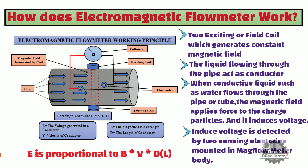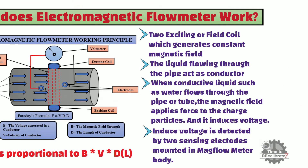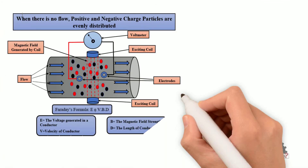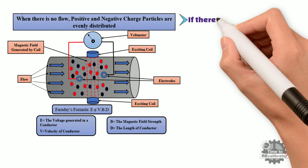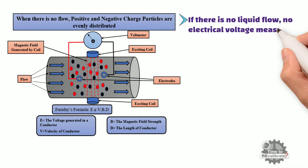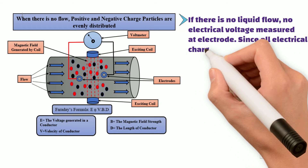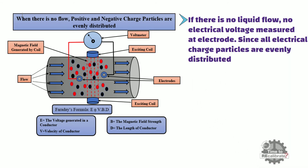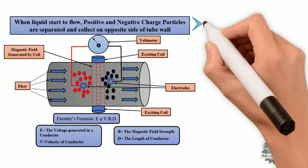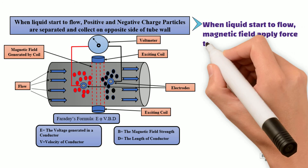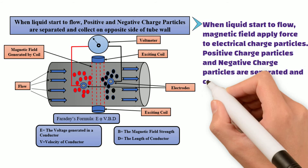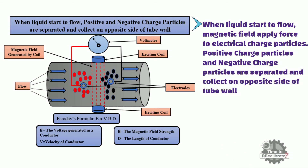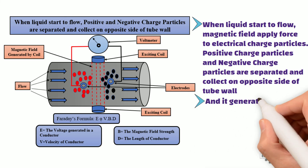In this equation, B is the magnetic field strength, V is the velocity of the conductor, and D is the length of the conductor. As you can see from the picture, if there is no liquid flow, no electrical voltage is measured at the electrodes, since all electrical charge particles are evenly distributed. When liquid starts to flow, the magnetic field applies force to the electrical charge particles — positive and negative charge particles are separated and collect on opposite sides of the tube wall — generating an electrical voltage.